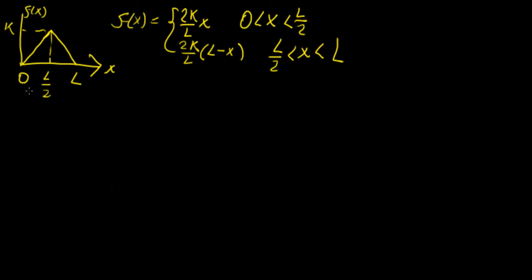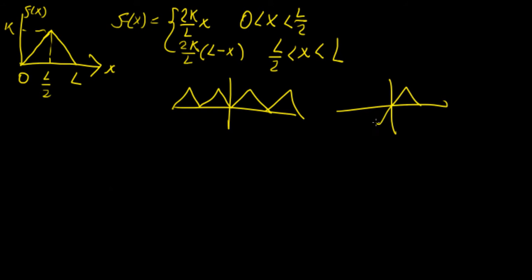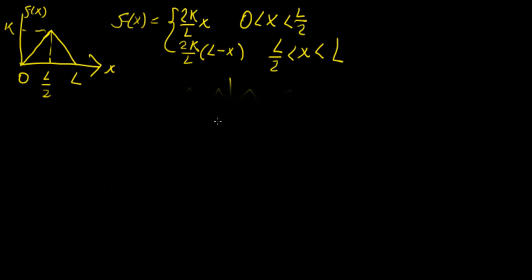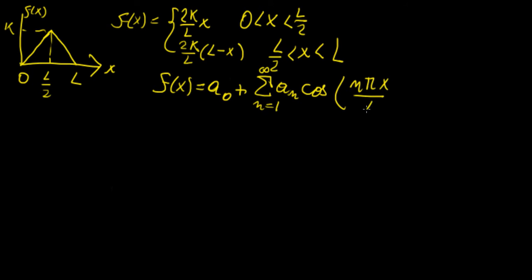First we need to decide: are we going to expand this as an even or odd function? An even expansion gives a symmetric shape, and an odd expansion gives a triangular sine-wave shape. In this example we want to use the cosine series expansion, so we choose an even expansion. That means f(x) is represented as a₀ plus the sum from n=1 to infinity of aₙ cosine(nπx/L).